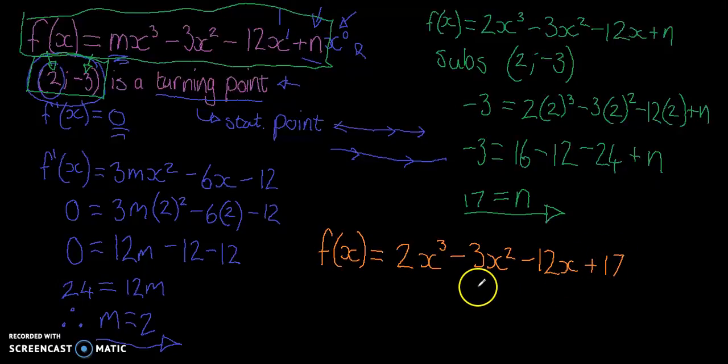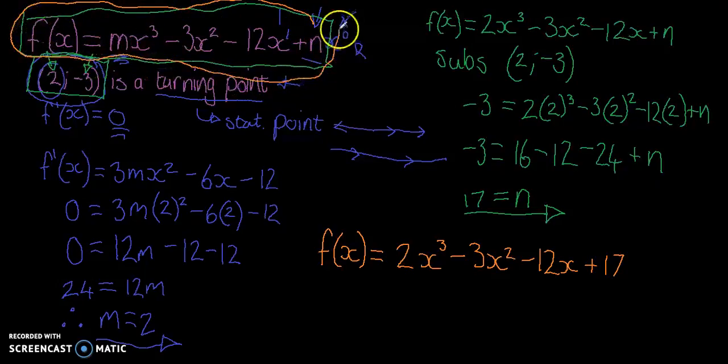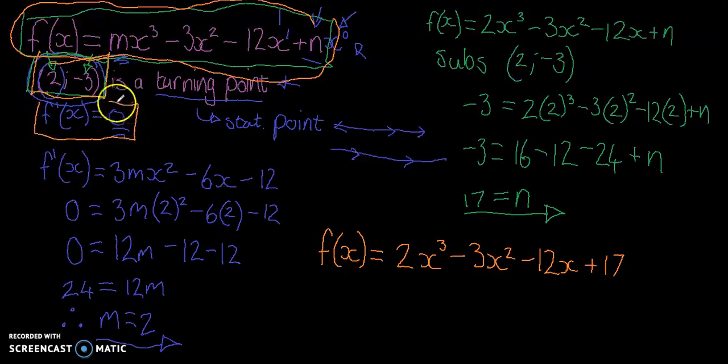So in short, we've found the equation of a cubic function, or at least we've completed the equation of a cubic function by using just the turning point. We found, well, we know that the gradient of the turning point is always equal to zero, and the way we find the gradient of the tangent to the line is by using the derivative. So we found the derivative of the function.